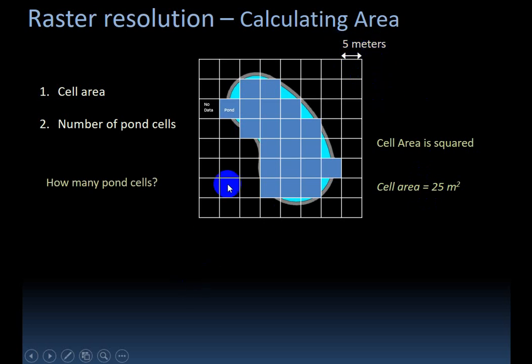And so then, how many pond cells do we have? In our case, we can just count them: 1, 2, 3, 4, 5, 6, 7, 8, 9, 10, 11, 12, 13, 14, 15, 16, 17, 18, 19, 20.